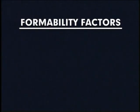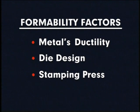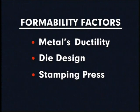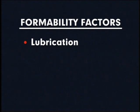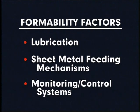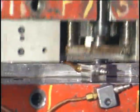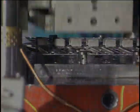Those include the ductility of the metal, the die design, the stamping press, press speed, lubrication, the sheet metal feeding mechanisms, and monitoring systems and controls which safeguard and synchronize the operation. Because of these various factors, formability differs from one part or operation to the next.